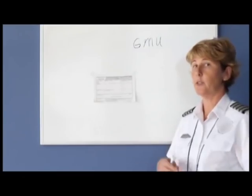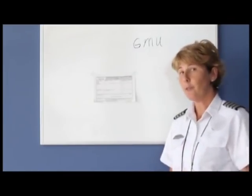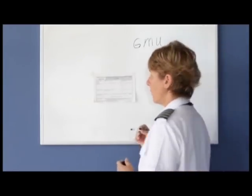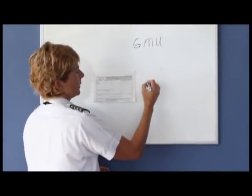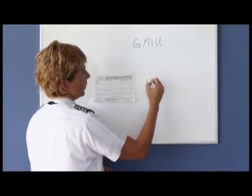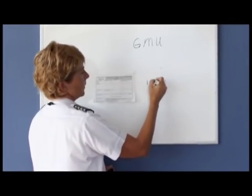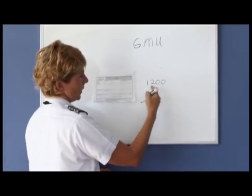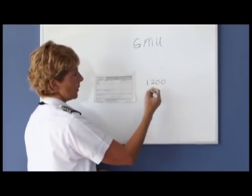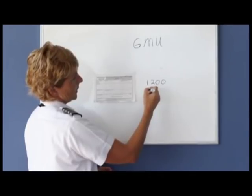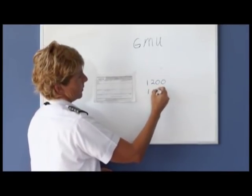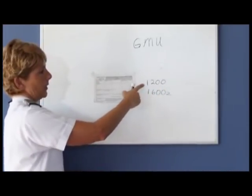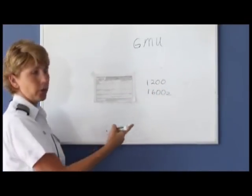To convert to Zulu time, you add four hours in summer and five hours in winter. For example, if we intend to leave at 12 o'clock local time — noon — then Zulu time in military format would be 1600, because it's our local time plus four hours to put it into Zulu.